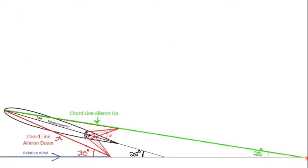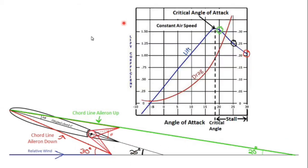In this example, the wing is moving sideways along the bottom of the screen. The line on the bottom is the relative wind, opposite the direction of movement. You can see three different angles of attack depending on aileron position: a 30-degree angle, a 25-degree angle, and a 20-degree angle.